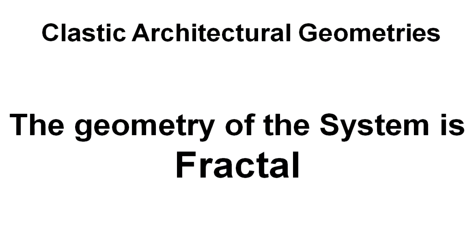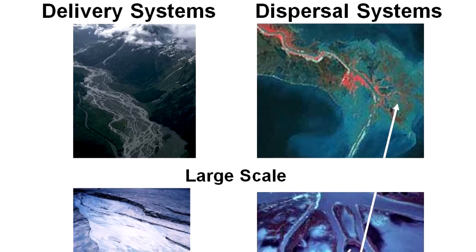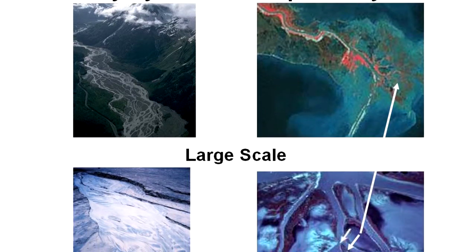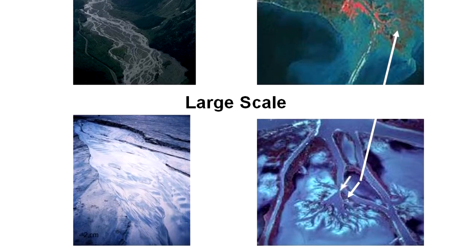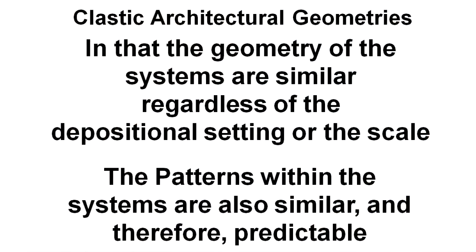The other interesting phenomenon is the geometry of the systems are fractal. That means they're the same at large scale and at small scale. So I can look at the Mississippi River Delta, which is a large scale feature, and see within it crevasse splays that are exactly the same geometries of the larger delta. Because the geometry of the systems are similar, irregardless of the depositional setting or the scale, the patterns within the system are also similar, and therefore they are predictable.